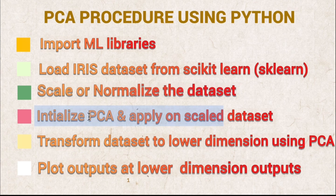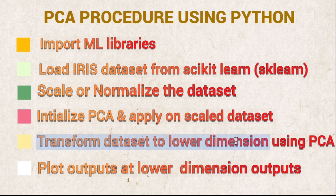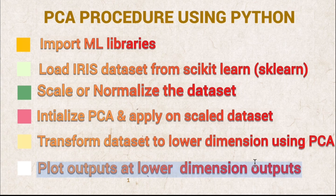To apply PCA, first initialize PCA, then apply it on the scaled dataset using the fit function. After application of PCA, we get the principal components. Here we are going to choose two principal components — the number of components will be two. Once we get the principal components, we transform the dataset to a lower dimension, that is dimension equal to two using PCA. Finally, we are going to plot the outputs at this dimension. When you have only two dimensions or two features, visualization becomes very easy.